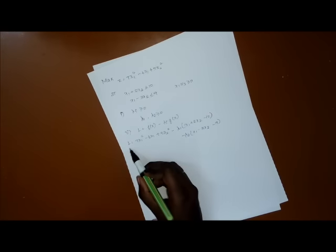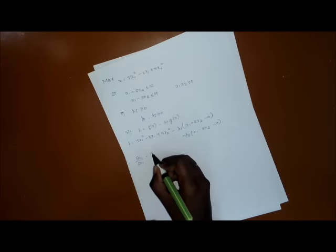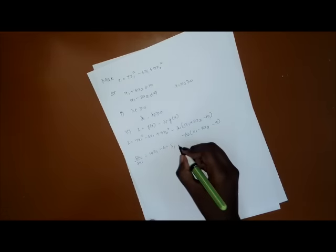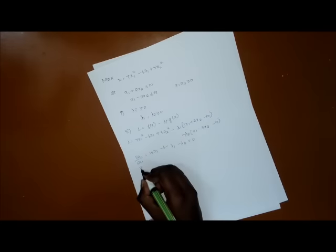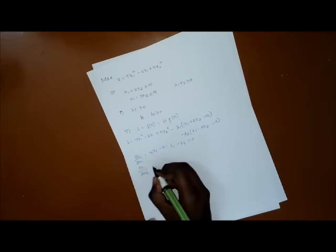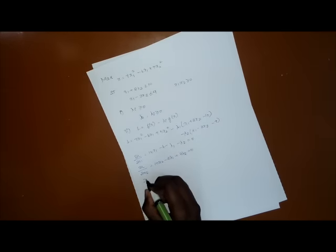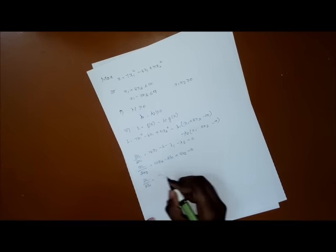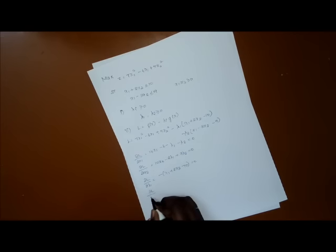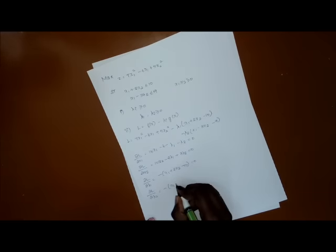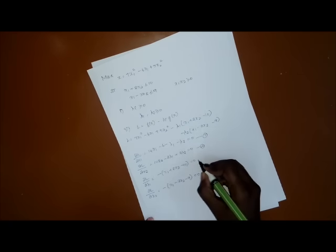Now we partially differentiate L with respect to x1, x2, λ1, and λ2 and equate each to zero. So: ∂L/∂x1 = 14x1 − 6 − λ1 − λ2 = 0 (Equation 1). ∂L/∂x2 = 10x2 − 2λ1 + 3λ2 = 0 (Equation 2). ∂L/∂λ1 = −(x1 + 2x2 − 10) = 0 (Equation 3). ∂L/∂λ2 = −(x1 − 3x2 − 9) = 0 (Equation 4).